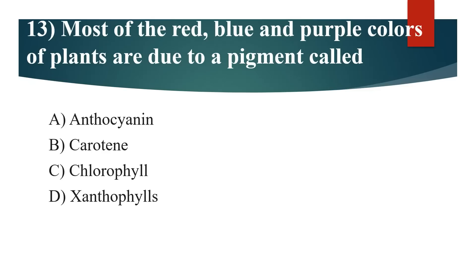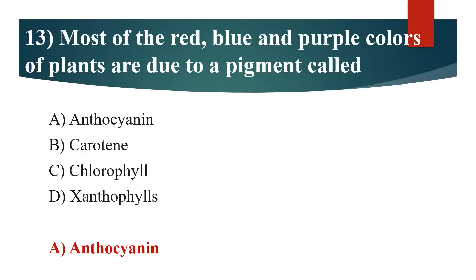13th question: Most of the red, blue and purple colors of plants are due to a pigment called? Option A: Anthocyanin. Option B: Carotene. Option C: Chlorophyll. Option D: Xanthophylls. Answer is Option A: Anthocyanin.